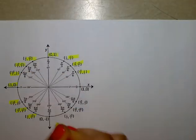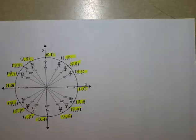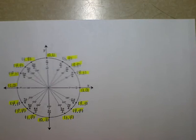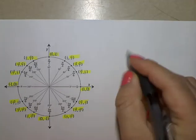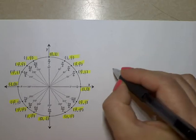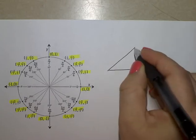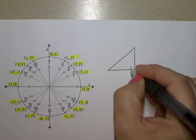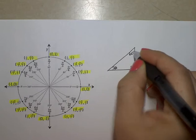We went over how to create these ordered pairs or coordinates based on the triangles, the 30, 60, 90 triangle, and also based upon the 45, 45 triangle. And then yesterday we learned a shortcut to just memorizing them.